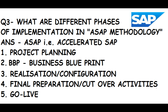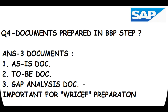The third question is: what are the different phases of implementation in ASAP methodology? ASAP stands for Accelerated SAP. There are five stages: first, Project Planning — deciding team and roles; second, BBP (Business Blueprint) — the detailed documentation phase; third, Realization or Configuration; fourth, Final Preparation or Cutover Activities; and fifth, Go Live — where everything is finalized and the system is handed over to the user.